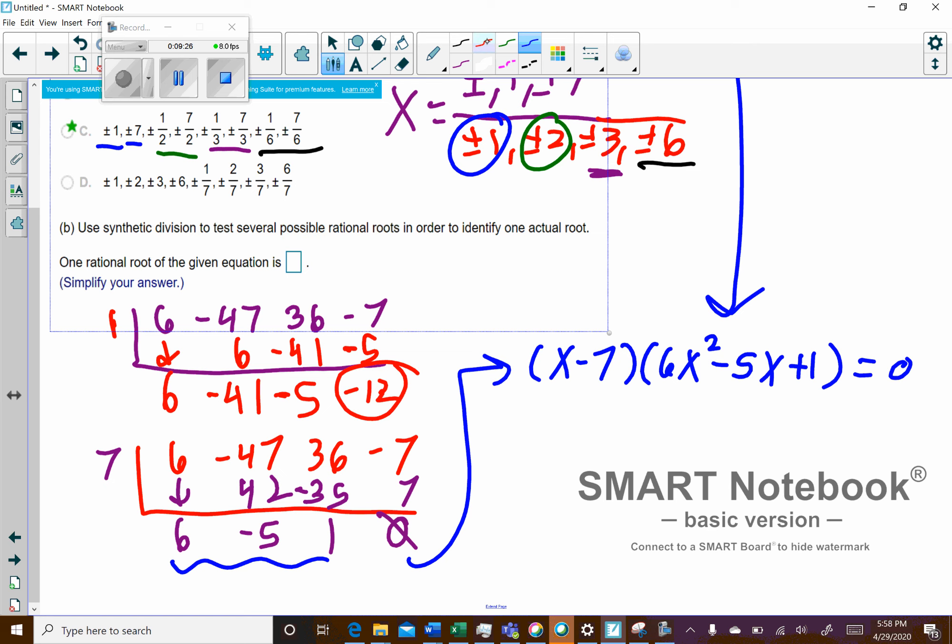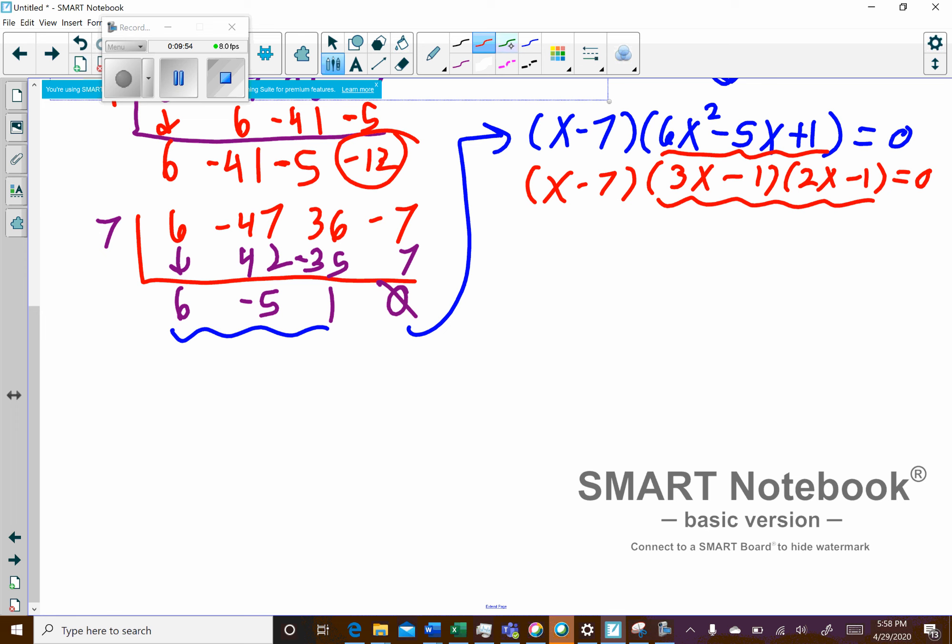This right here is the equivalent to what I have down here. This is the same thing. I've actually just kind of factored it because I figured out one of my solutions is 7. So then I have to figure out the other two. Now sometimes you have to do the quadratic formula. In this particular case, it is factorable, so we can go ahead and factor it. But sometimes you're going to have to do the quadratic formula, so just be aware of that.